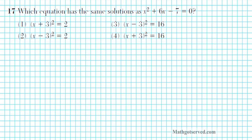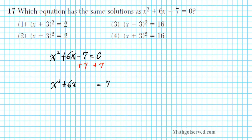Let's take a look at problem 17. It says: which equation has the same solutions as x squared plus 6x minus 7 equals 0? What you notice in the four options is that the squares have been completed. So we need to complete the square in this expression. We have x squared plus 6x minus 7. We're going to create an incomplete square on the left side by adding 7 to both sides, creating an incomplete square and getting rid of that constant.